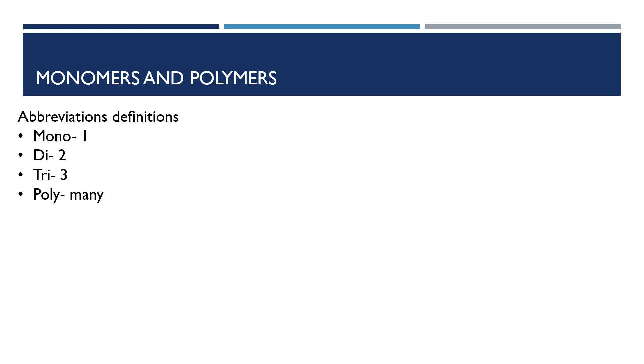There are different abbreviations for monomers and polymers, mostly polymers, as you usually have a word in front of the polymer, such as monosaccharide or disaccharide. But what do these actually mean?